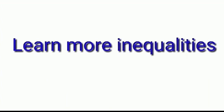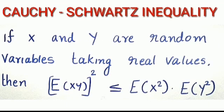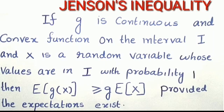Critchfield inequalities: Cauchy-Schwarz inequality — if x and y are random variables taking real values, then E(xy)² is less than or equal to E(x²) · E(y²).